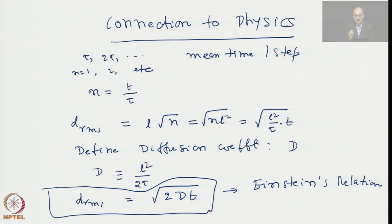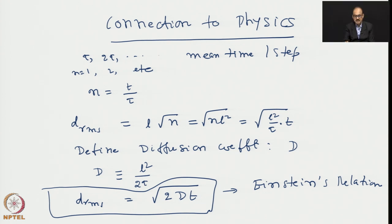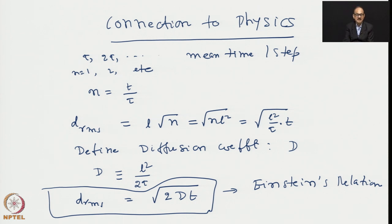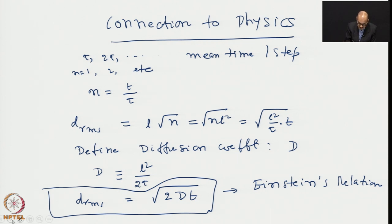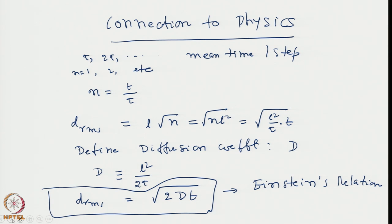One should plot the rms displacement as a function of the square root of t to get a straight line, or plot the square of the rms distance as a function of time, which will also be a straight line. The slope of that straight line is a measure of the diffusion coefficient of the system. This is a very practical connection established by a simple random walk model, validated by a large number of experiments, and is the cornerstone of modern non-equilibrium physics.